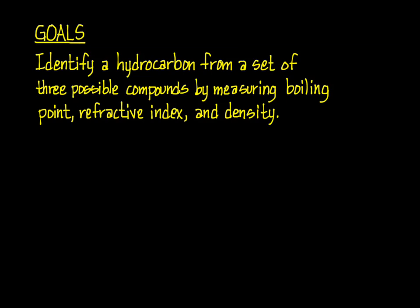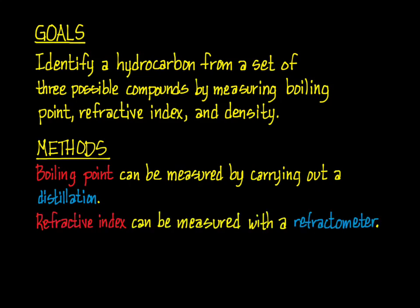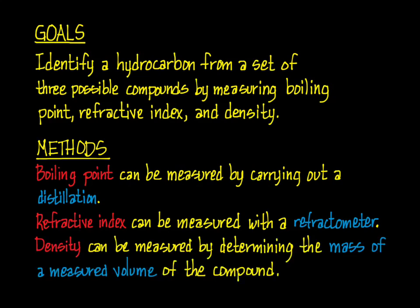Moving on to the goals and methods. Your goal in this experiment is to identify which of the three compounds you were assigned as your unknown. You will do this by carrying out a distillation to measure its boiling point, using a few drops of the distilled compound and measuring its refractive index, and determining the compound's density by carefully measuring the mass of an accurately measured volume of the compound. Because the compounds are volatile hydrocarbons, this can sometimes be the hardest part of the experiment.